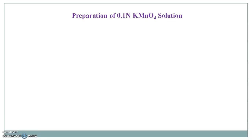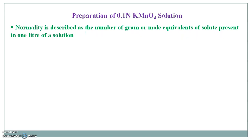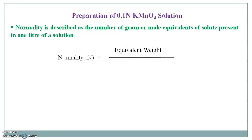Before that, you must know about what is a normal solution or what is normality. Normality is described as the number of grams or equivalents of solute present in 1 liter of a solution. That is, normality N is equal to the ratio of equivalent weight of solute by volume in liters.